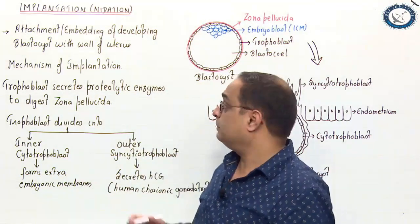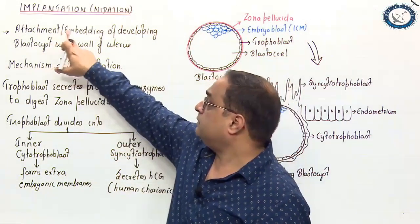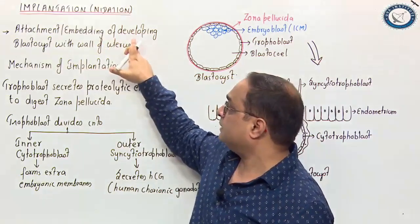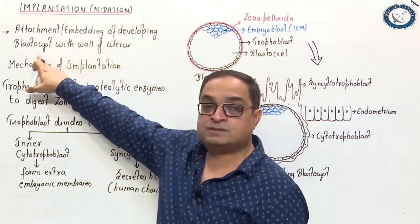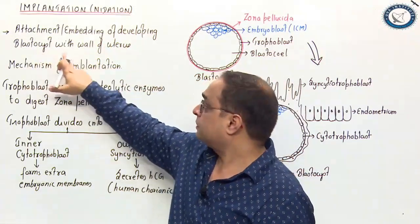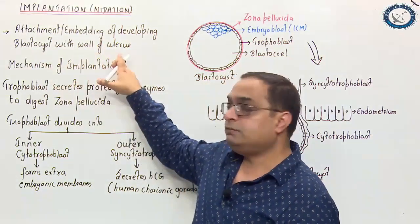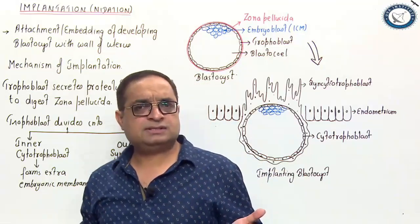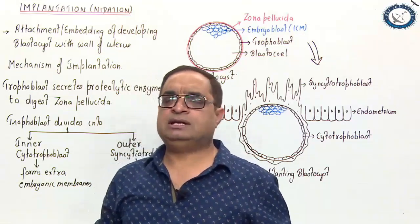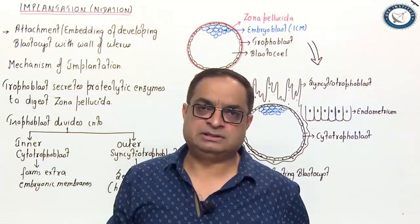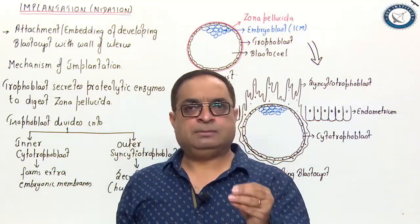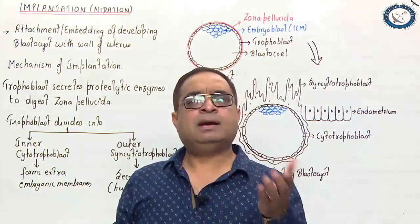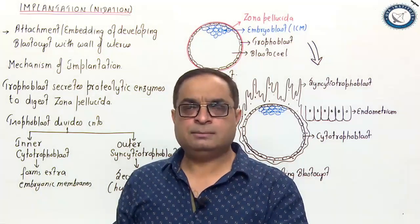How do we define implantation? Attachment or embedding of the developing blastocyst with the wall of the uterus. Blastocyst is the blastula in the case of mammals. For mammals, we use the term blastocyst; for non-mammals, we say blastula.